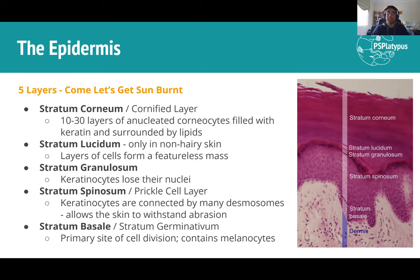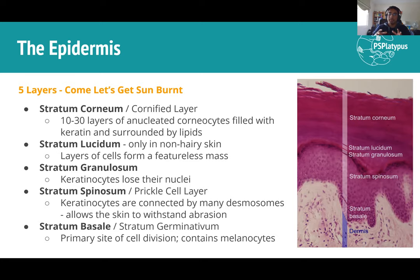The stratum granulosum is where keratinocytes lose their nuclei; it appears very dark in histology because the proteins present are highly basophilic (purple). Under that is the stratum spinosum — most living keratinocytes with nuclei reside here, connected by desmosomes (tight junctions) allowing them to stick together and communicate. This connectivity lets the skin resist abrasion and flex.